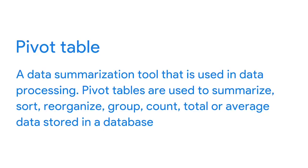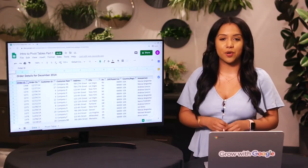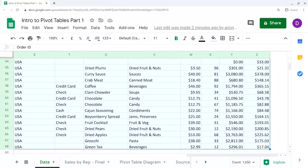A pivot table is a data summarization tool used in data processing. Pivot tables are used to summarize, sort, reorganize, group, count, total, or average data stored in a database. It allows users to transform columns into rows and rows into columns. We'll learn more about pivot tables later, but I'll show you one really quick.